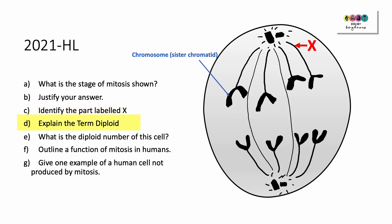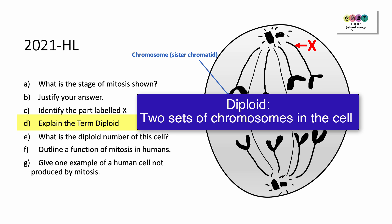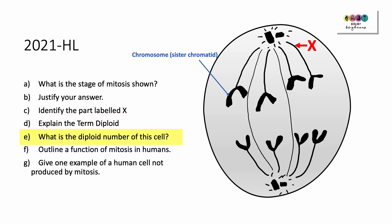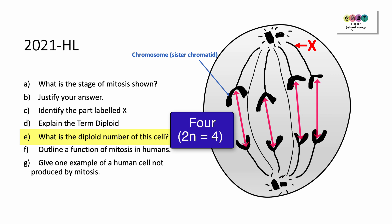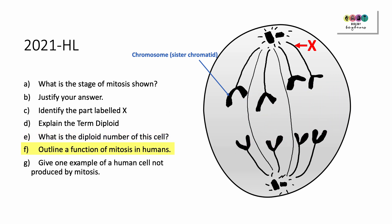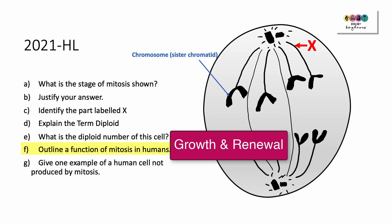Explain the term diploid. This means that there are two sets of chromosomes in the cell — the chromosomes occur in pairs, or you could say there are two sets of chromosomes in the nucleus of the cell. What is the diploid number of this cell? It's four — we can write it as 2n equals four. Outline a function of mitosis in humans: mitosis is used for growth or for cell renewal.